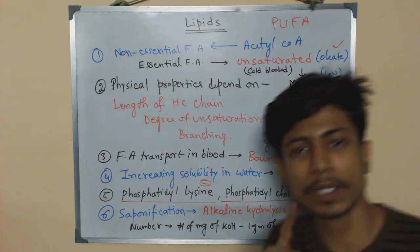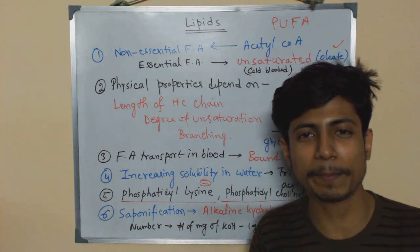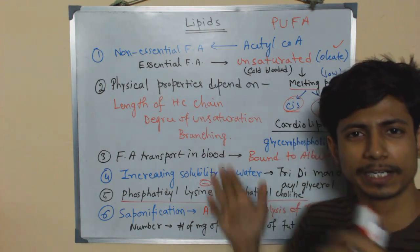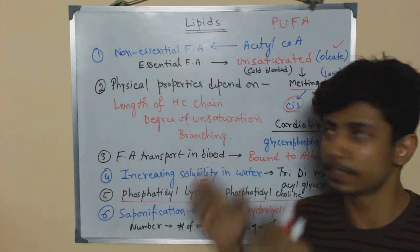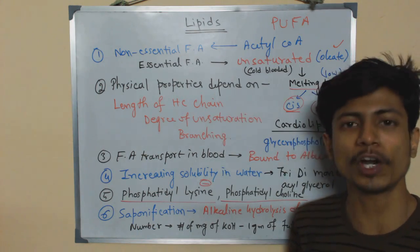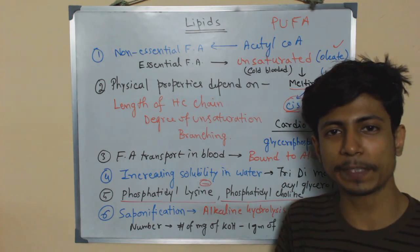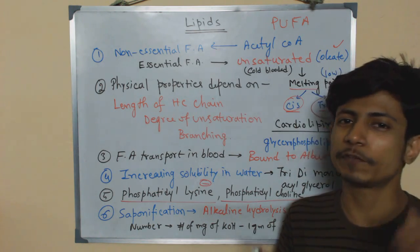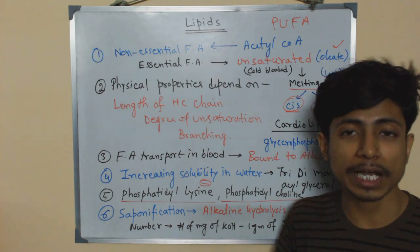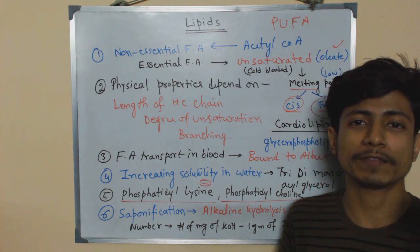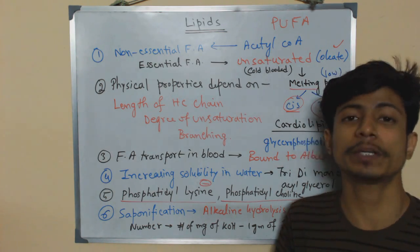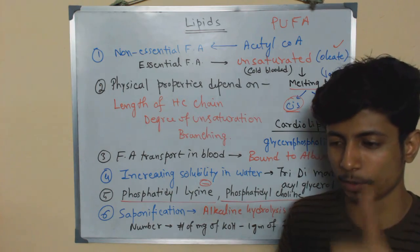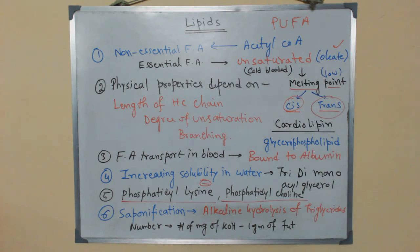One more thing to mention is sphingolipids. Examples of sphingolipids include sphingomyelin, globosides, and cerebrosides. These are distinct from the glycolipids discussed earlier. Thank you.